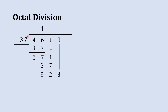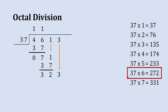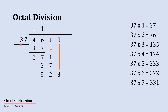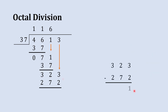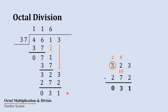We bring down 3, so the number becomes 323, which is larger than 37. Referring to the table: 37 threes are 135 (larger than 323), so we try 37 sixes, which are 272. Now subtract 272 from 323: 2 minus 3 — borrow needed, 8 comes here, 2 over here. 8 + 2 = 10, 10 minus 7 is 3, and 2 minus 2 is 0. The subtraction result is 31.